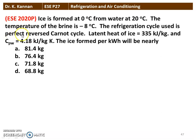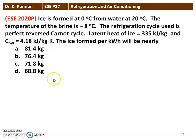The next question from the 2020 question paper: Ice is formed at 0 degree Celsius from water at 20 degree Celsius. The temperature of the brine is minus 8 degree Celsius. The refrigeration cycle used is a perfect reversed Carnot cycle. Latent heat of ice is 335 kilojoules per kilogram and specific heat of water is 4.18 kilojoules per kilogram Kelvin. The ice formed per kilowatt hour is nearly — we have 4 options here. The correct answer is 81.4 kilogram. We will see how in the next slide.